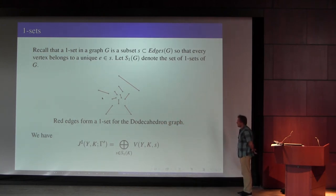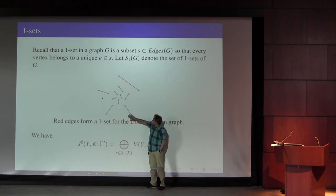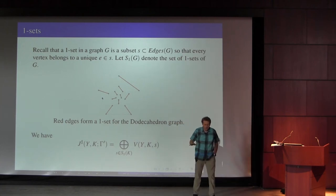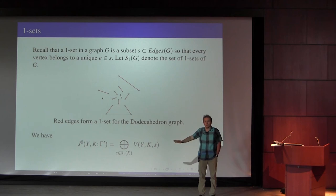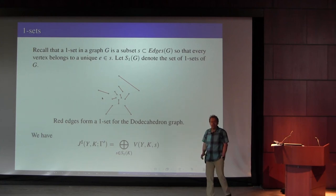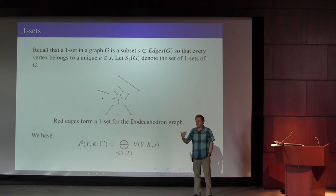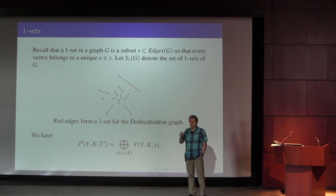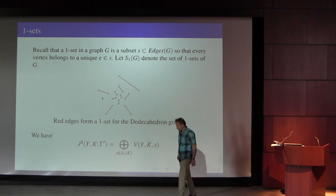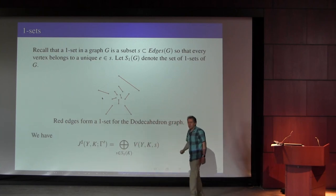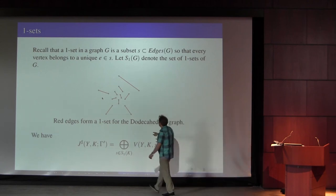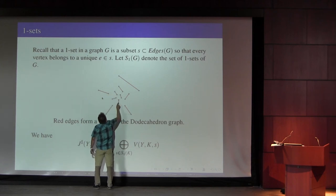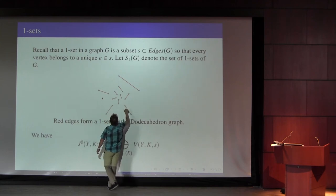That's just a restatement. To telegraph what's happening: if you think about where we're headed — suppose you have a three-coloring of a planar graph — then there are three obvious one-sets: the things that are the edges of a given color. If you look at the complement of those edges, it's what's called a two-set, or a Hamiltonian union of closed curves in the graph that pass through all the edges.